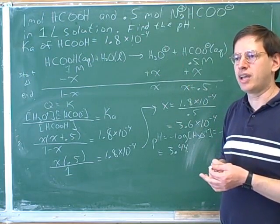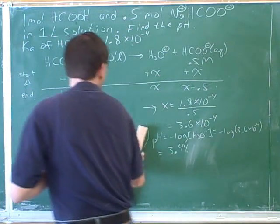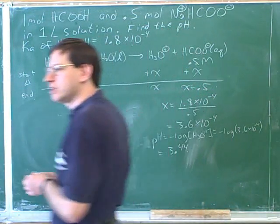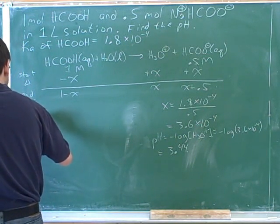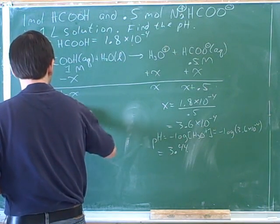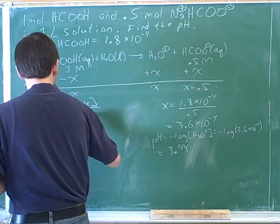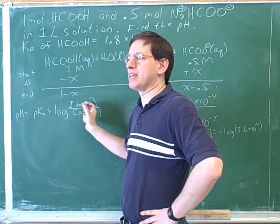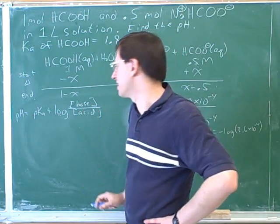Now there's a shortcut for these problems. Do you guys remember what the shortcut is? Henderson-Hasselbalch. That's right. So I guess you'll be given that formula on the test. The Henderson-Hasselbalch equation is pH equals pKa plus log of A minus over HA. Well, A minus is just a fancy way of putting the conjugate base, and HA is a fancy way of putting the acid, so it's better just to write it like this.